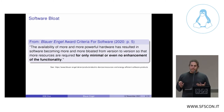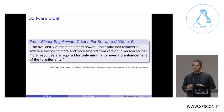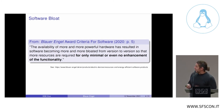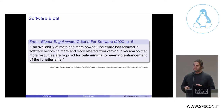To frame the conversation, I'm going to present a discussion of software bloat from the Blauer Engel award criteria, which were released in January 2020. They write: "The availability of more and more powerful hardware has resulted in software becoming more and more bloated from version to version, so that more resources are required for only minimal or even no enhancement of the functionality."